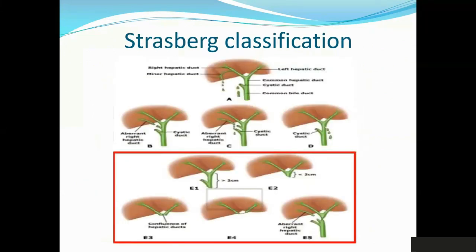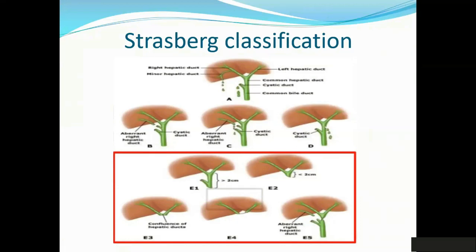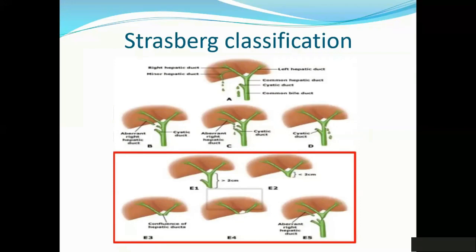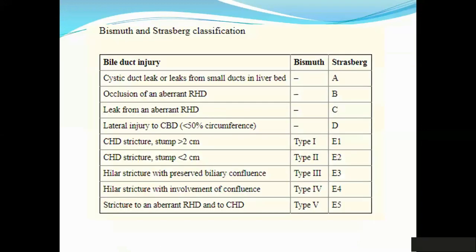Strasberg is slightly more complicated than Bismuth. It goes as A, B, C, D, E. The E of Strasberg is equivalent to the 1 to 5s of Bismuth — E1 through E5. The A, B, C, and D categories are fairly straightforward. Type A is a relatively minor injury — a cystic duct leak or a leak from a minor hepatic duct. Type B is when the injury results in occlusion of an aberrant right hepatic duct. Type C is when there's occlusion on one side and spillage on the other — this is the kind of injury you don't detect on ERCP because the bile leak is coming from the other end. Type D is what we call lateral injuries. That's essentially an amalgamation of the two classification systems together.